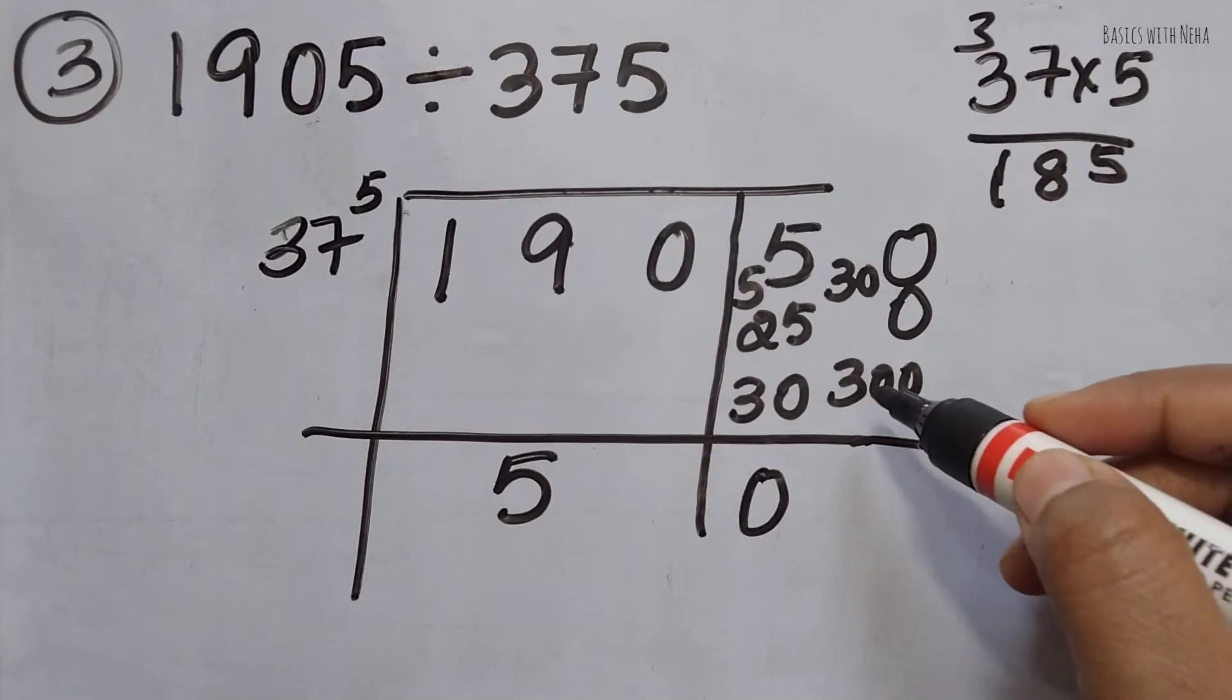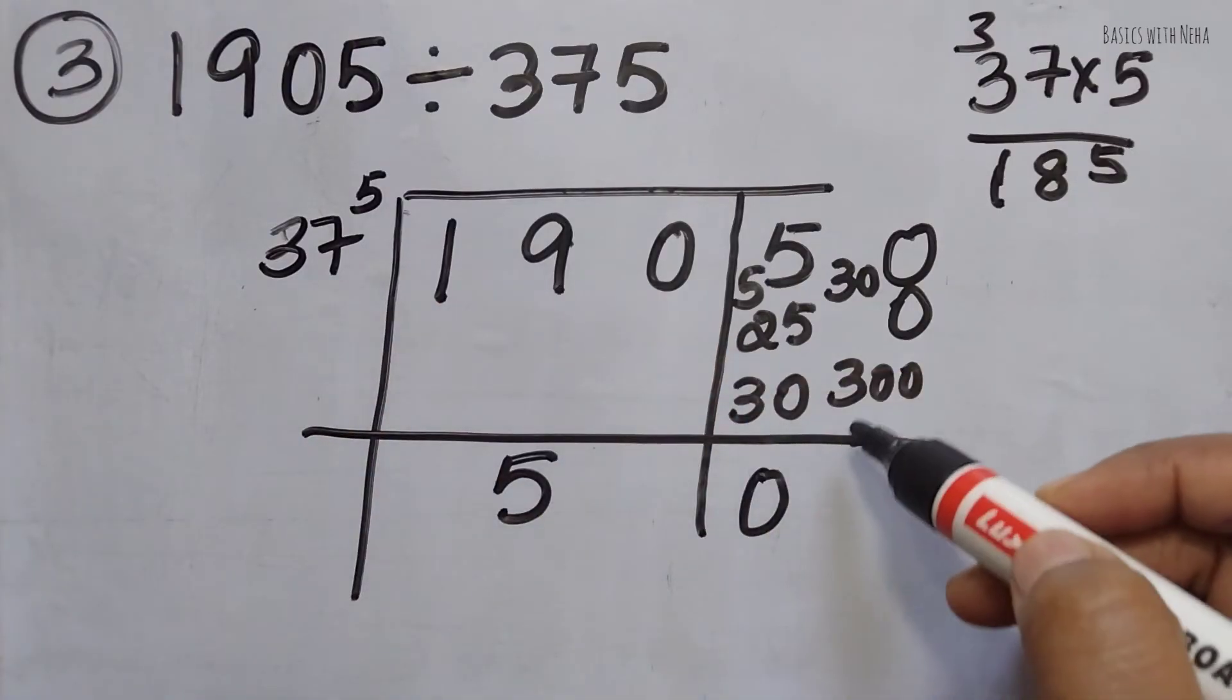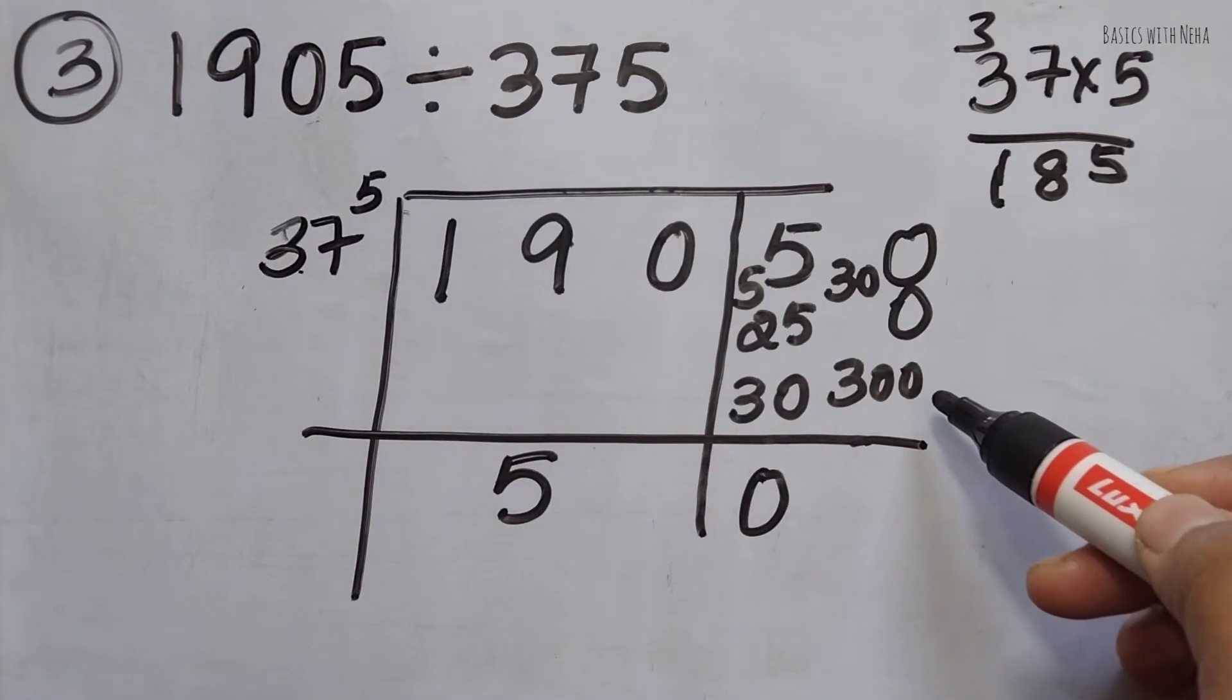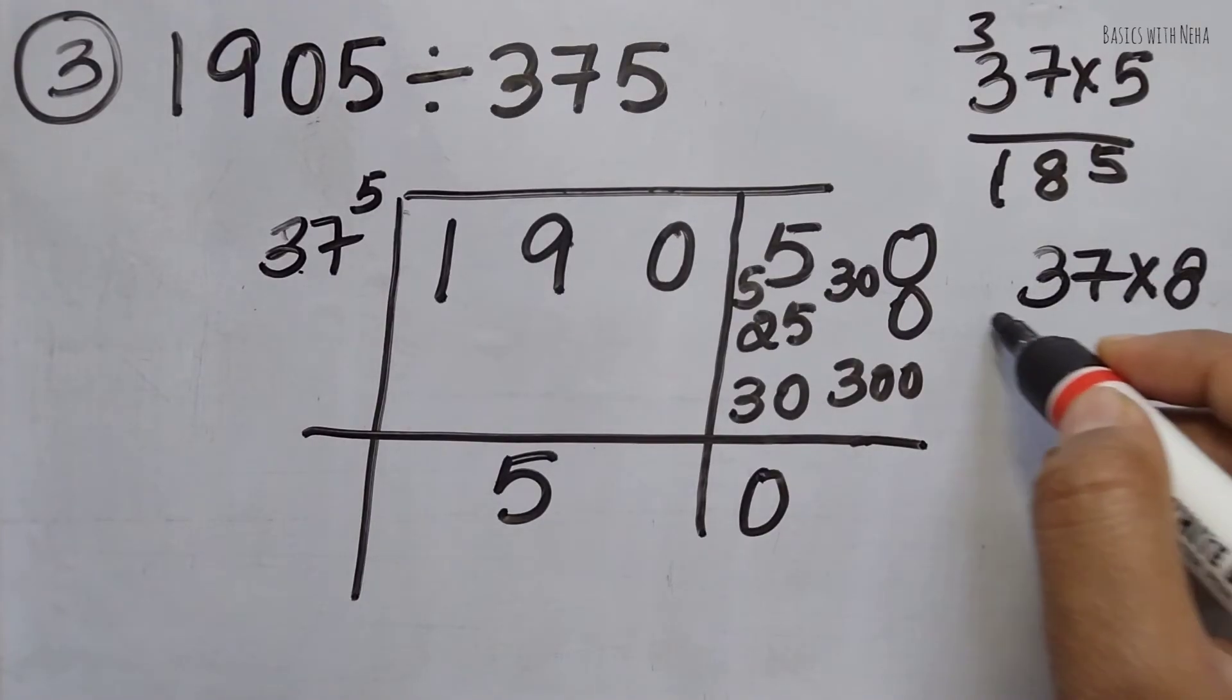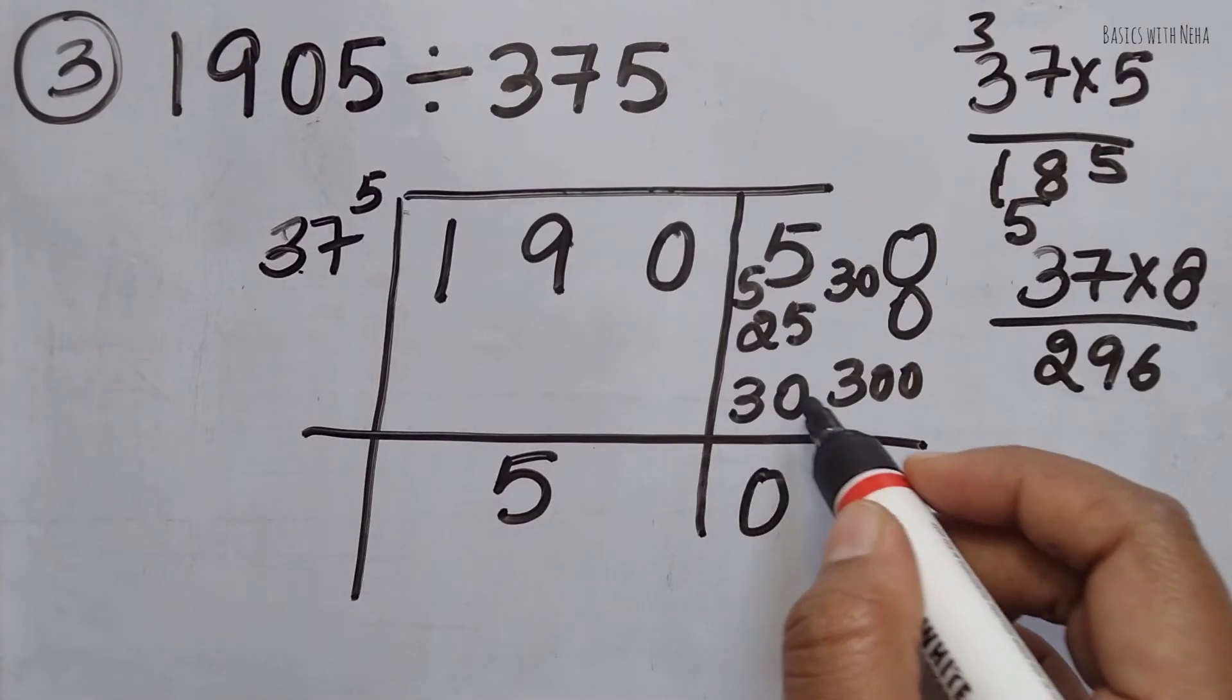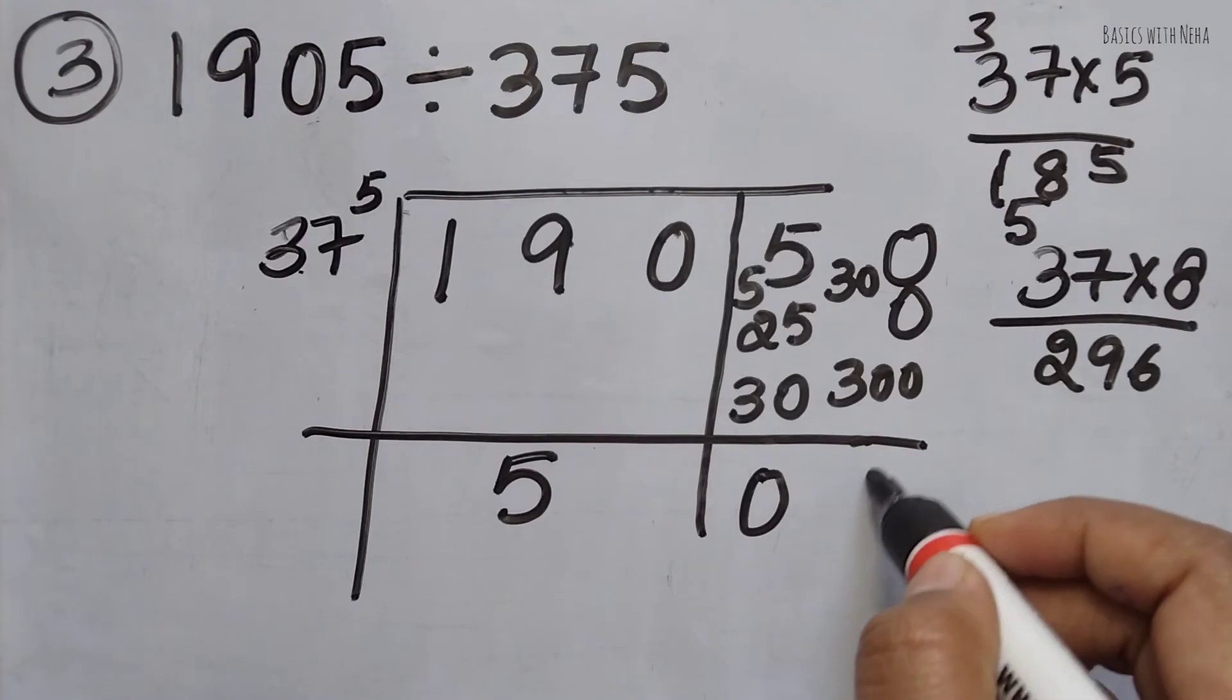Now I have 300. So how many times will 37 go? Let's try with 8 or 7. First we'll try with 8. So it is 37 times 8: 7 times 8 is 56, carry the 5, which gives 296. So 296 is very near to 300. I can take 37 times 8 is 296.